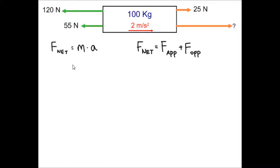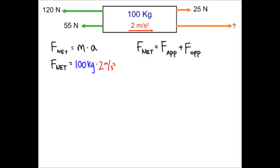A couple of things as far as reviewing: the net force is what's actually happening and what's actually causing the motion. Any time you do M times A, you're calculating the net force. So if we have the mass and the acceleration of what's actually happening, we can pretty easily get the net force. We're going to put in 100 kilograms times 2 meters per second squared and get our net force of 200 Newtons.